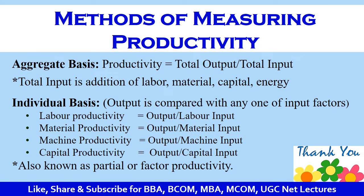Industrial productivity can be measured on an aggregate basis or on an individual basis. On an aggregate basis, the output is compared with all inputs added together — that is, the total inputs being the addition of labor, material, capital, and energy. On an individual basis, the output is compared with any one input factor, and this is also known as partial or factor productivity. In this case, productivity can be measured as labor productivity, material productivity, machine productivity, or capital productivity.